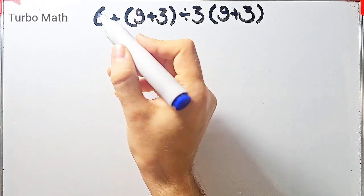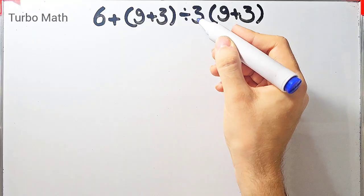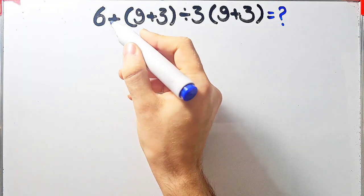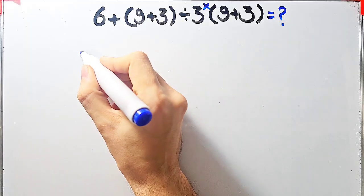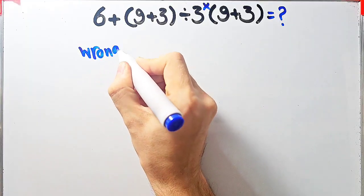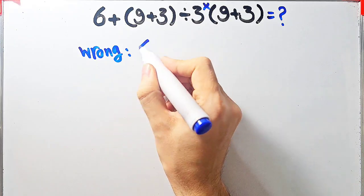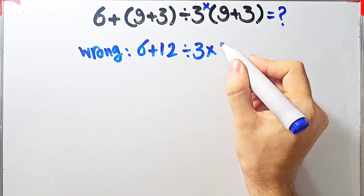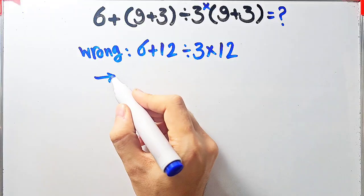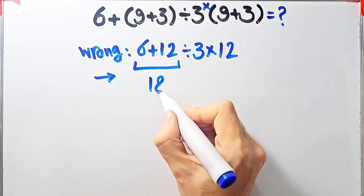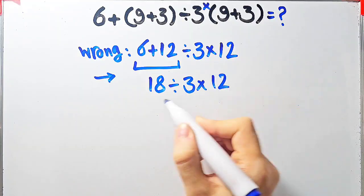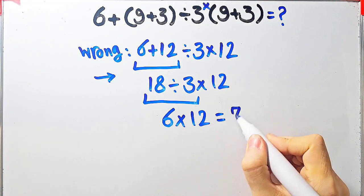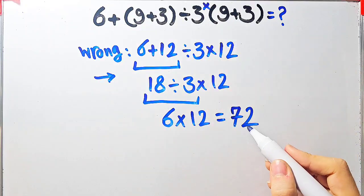In this question we have: 6 plus open parenthesis 9 plus 3 close parenthesis divided by 3, then times open parenthesis 9 plus 3 close parenthesis. Some people solve this incorrectly by starting from the left without following operation priority: 6 plus 12 equals 18, 18 divided by 3 equals 6, 6 times 12 equals 72. But this answer is definitely wrong.